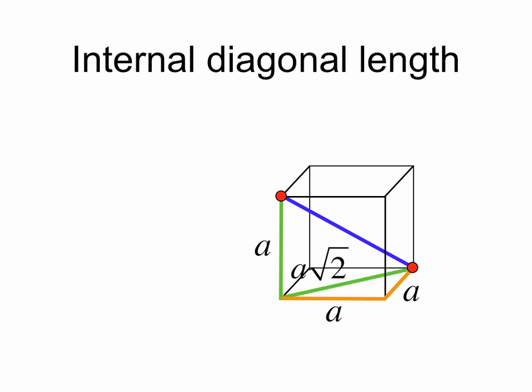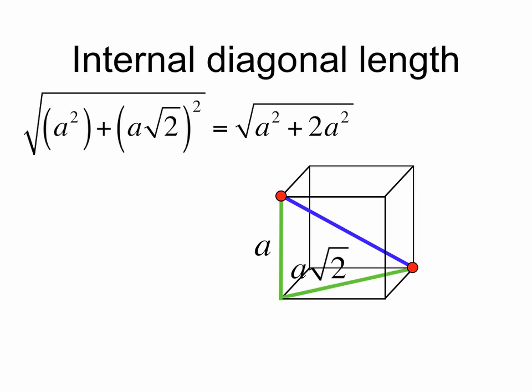And now we can use the two green lines, the legs of the original right triangle, to calculate the length of the blue line or the internal diagonal. So it'll be the square root of a squared plus a root 2 squared, which is a times the square root of 3.